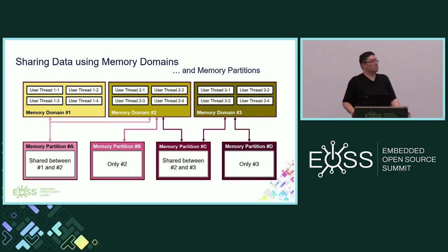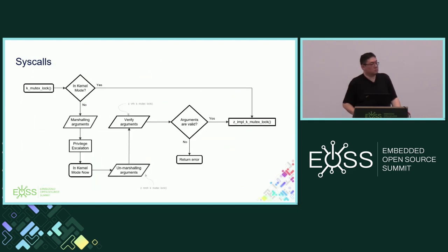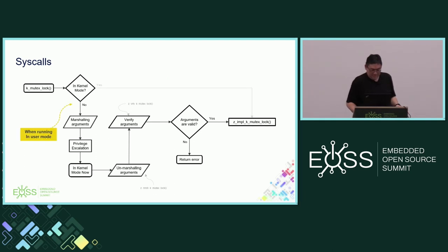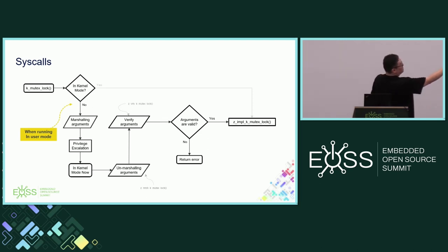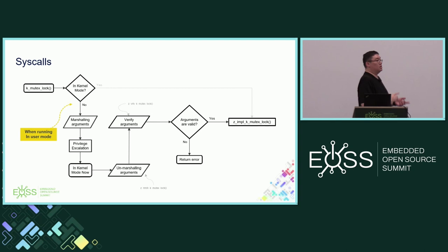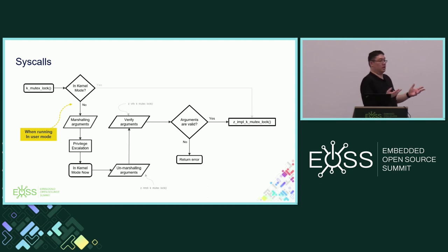Q: As a driver developer for a peripheral that doesn't use a standard API, how difficult is it to expose my code in user space? Do I need to worry about marshaling arguments? A: You don't have to worry about the marshaling — it's done behind the scenes. What you need to implement is the verification function and the implementation, and declare your API as a syscall.